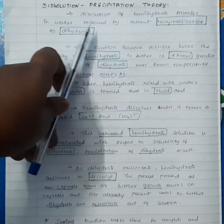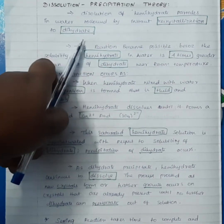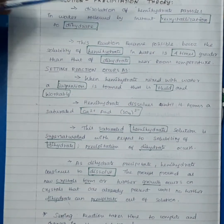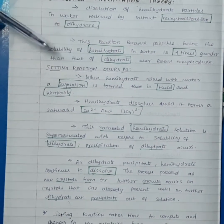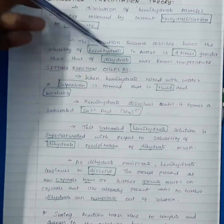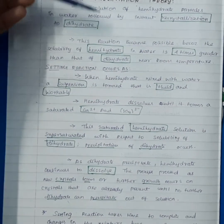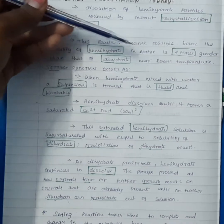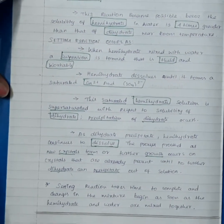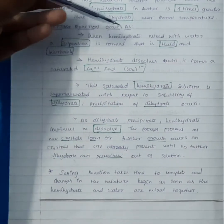Dissolution precipitation theory: hemi-hydrate particles dissolve in water followed by instant re-crystallization to dihydrate. This reaction is possible because the solubility of hemi-hydrate in water is four times greater than that of dihydrate.